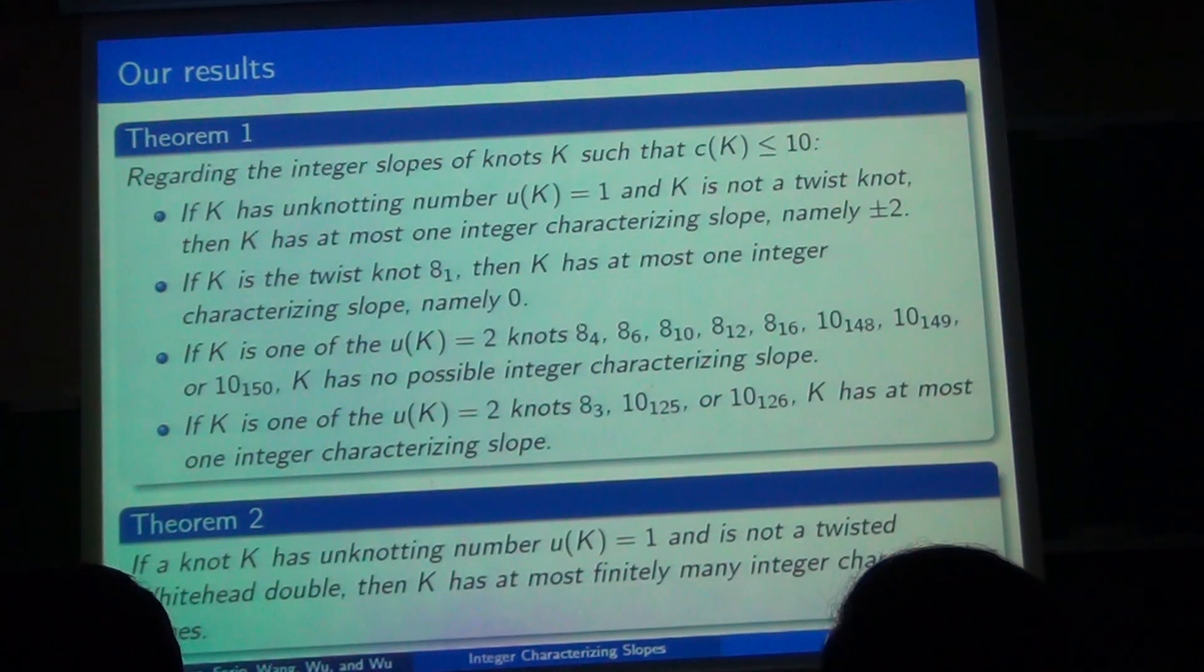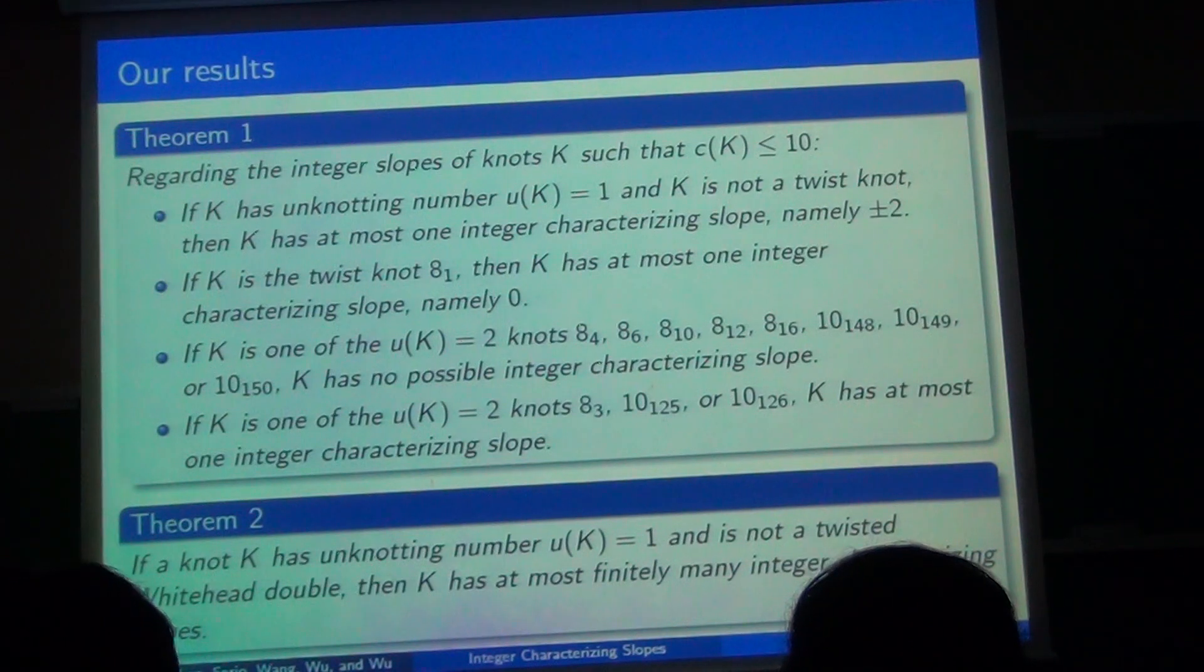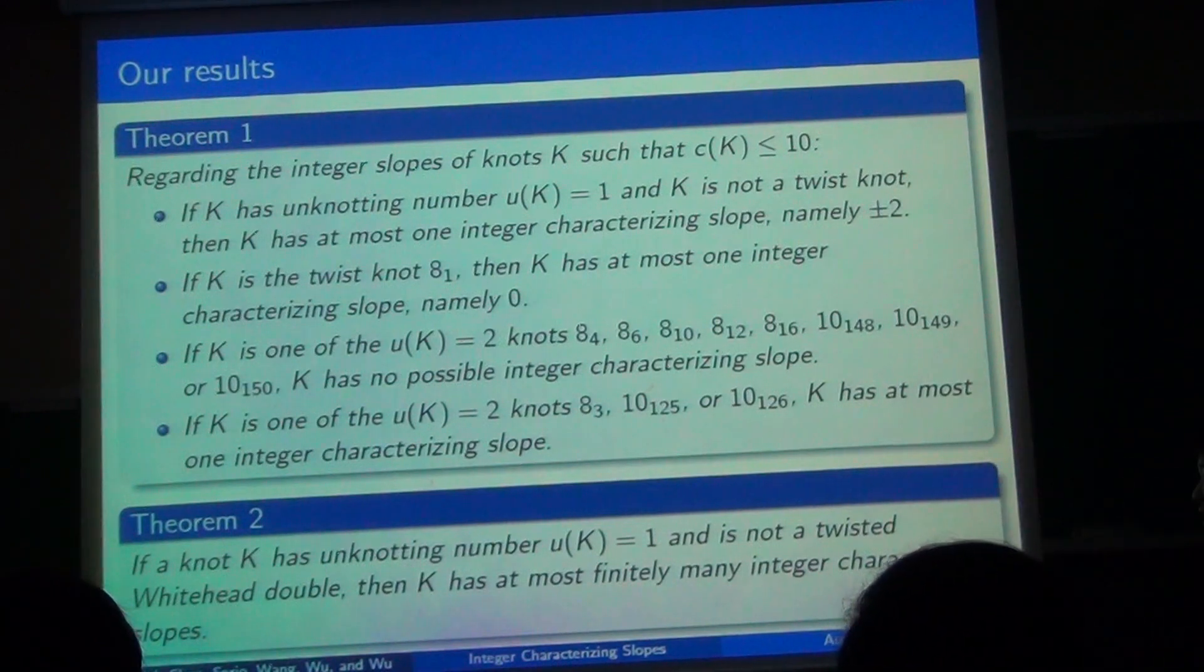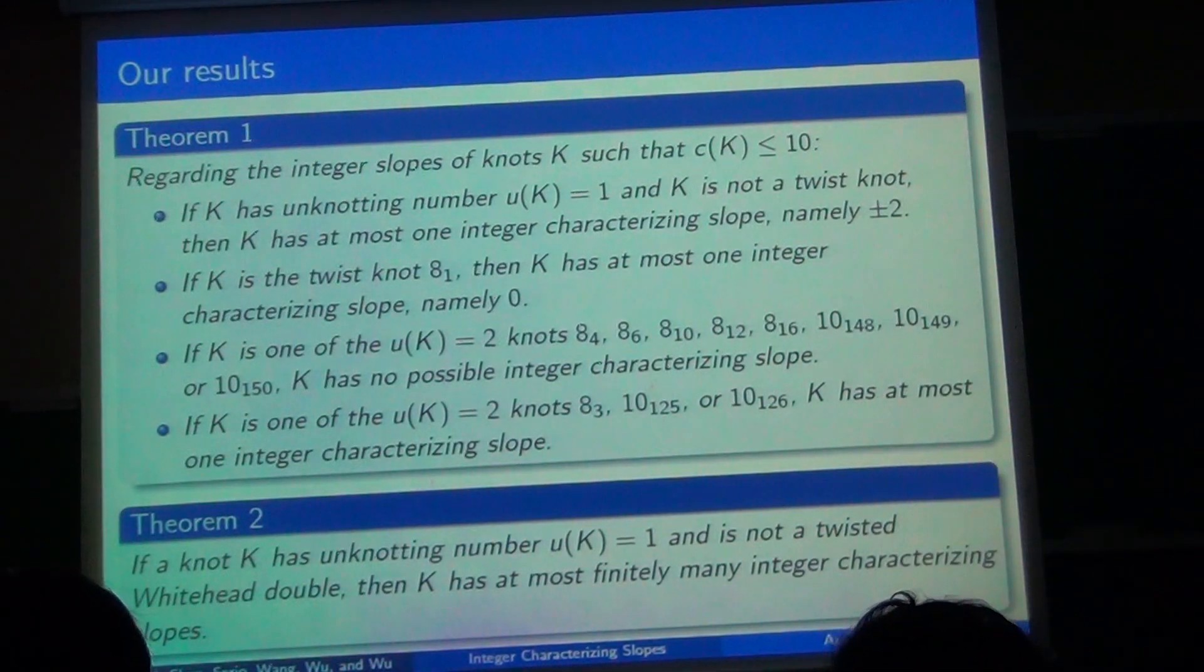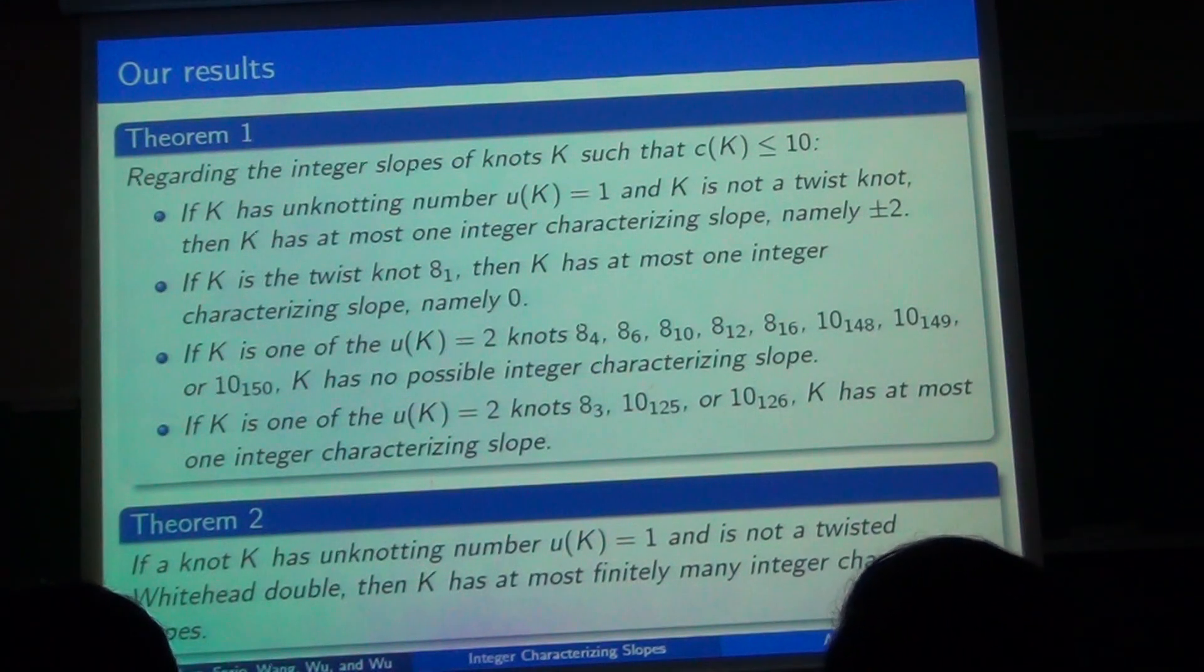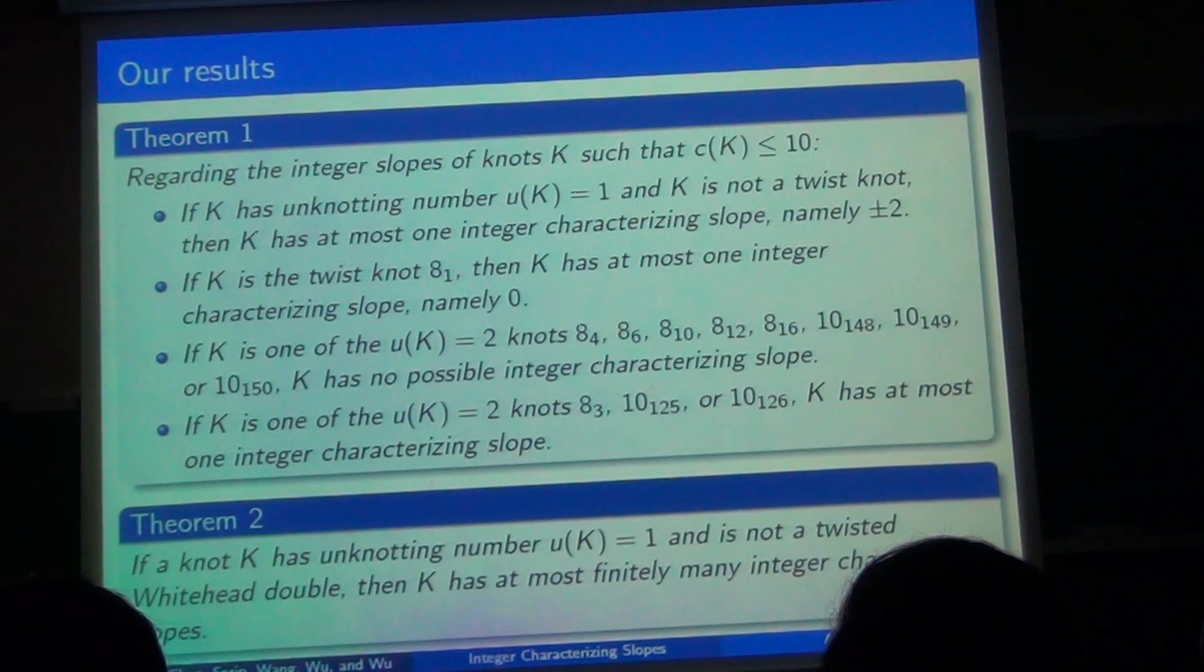So our first theorem deals with knots with ten or fewer crossings. So if it has unknotting number one and it's not a twist knot, then it has at most one integer characterizing slope. As we said before, we don't have a systematic way of dealing with knots that don't fit this condition. We also found a more general theorem that if K has unknotting number one and it's not a twisted double, then it has at most finitely many integer characterizing slopes.